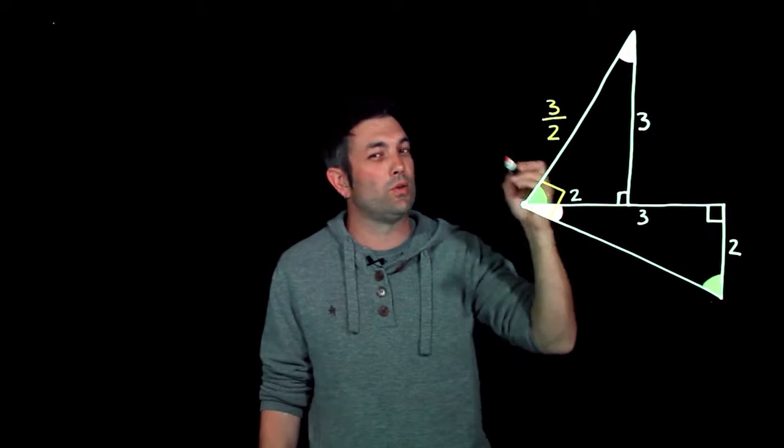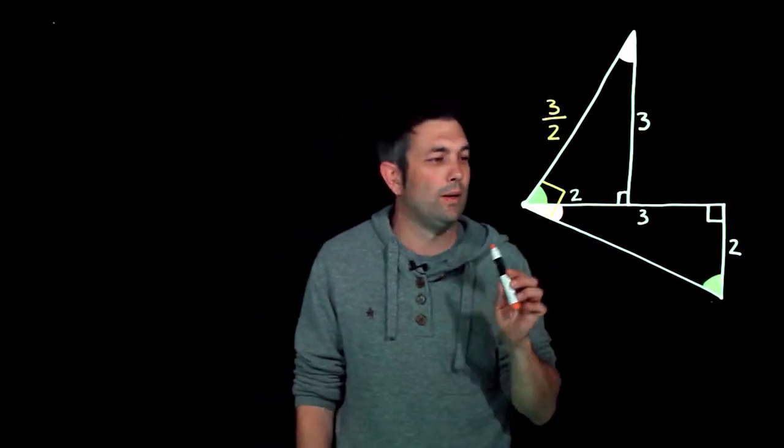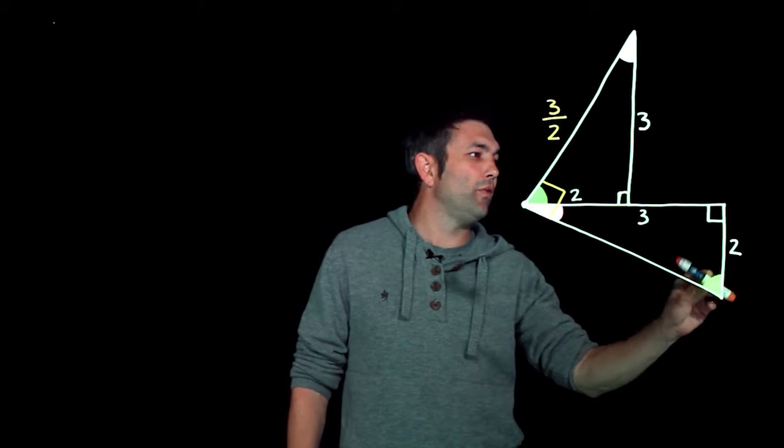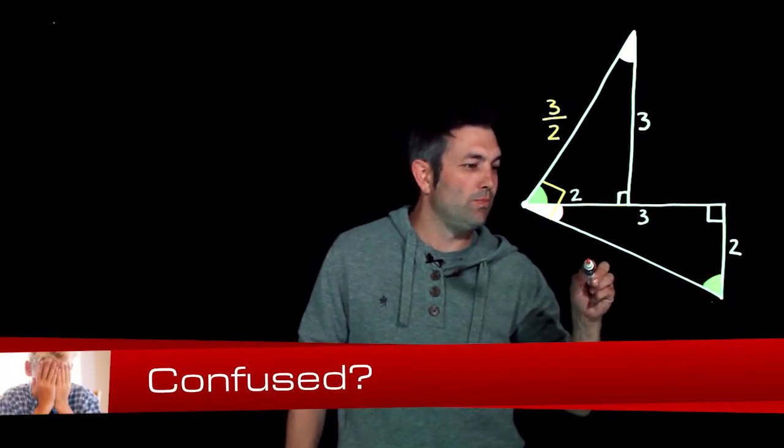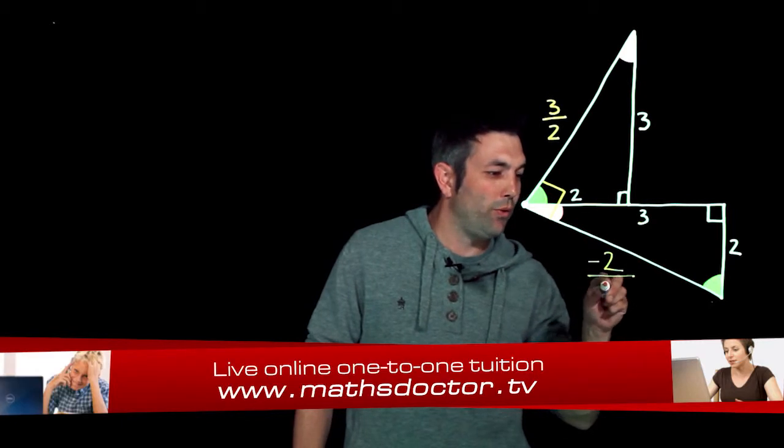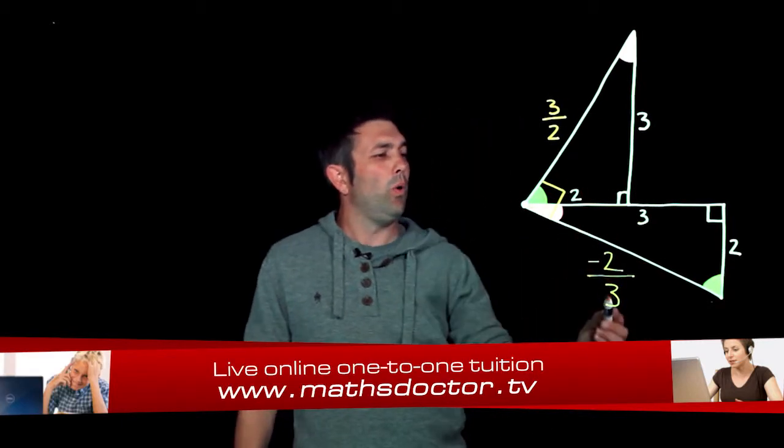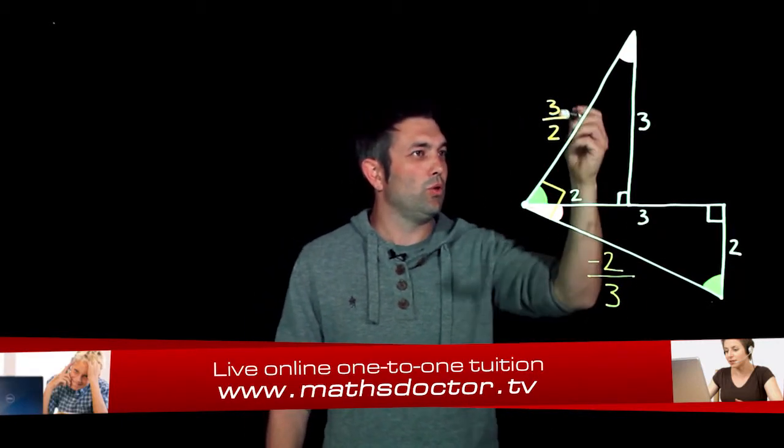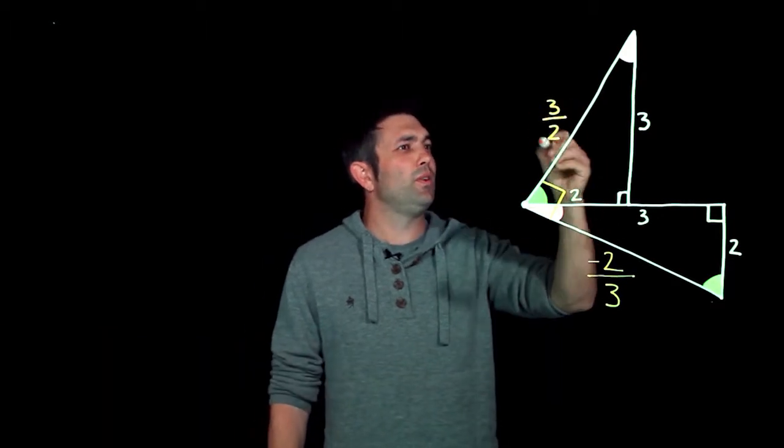Now with this one here, the rise over the run, well it's gone down two so it's -2, and it's gone along three, over three.